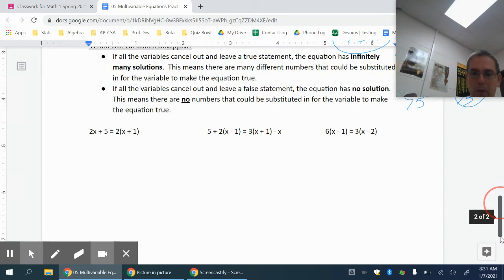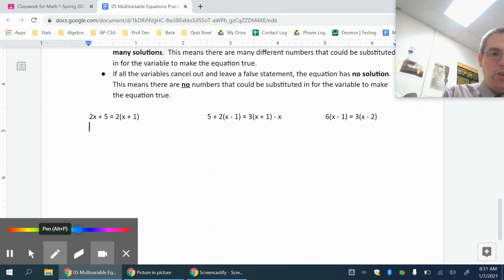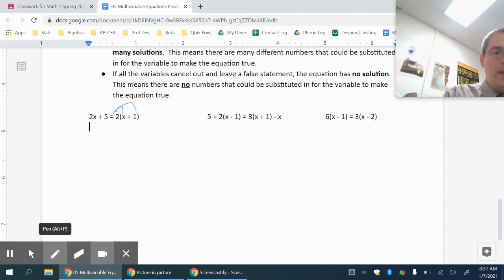When my variables disappear, you're going to have some problems where as you solve them, the variables will kind of vanish on you. So let's just look at these examples. You can multiply the 2 through there. So you'd have 2x plus 5 equals 2x plus 1.